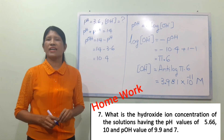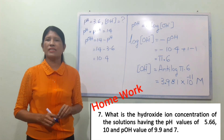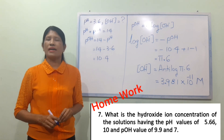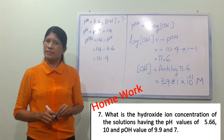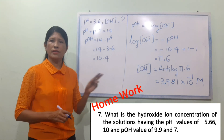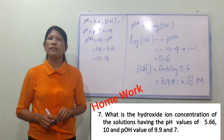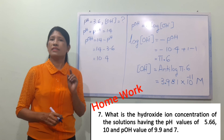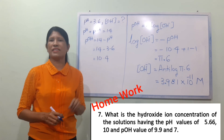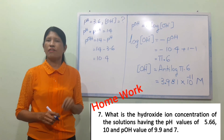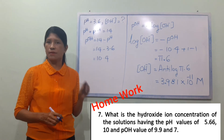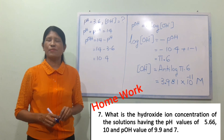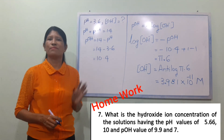So if we add pH to pOH, we get pH plus pOH equals 14. The ion concentration is equal to 10 power minus pH. That is it. Do you like this? See you next lesson. Bye-bye.